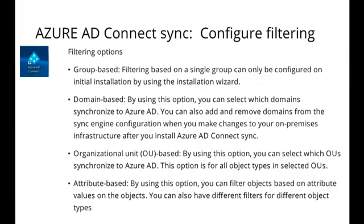Now, in general, this is the recommended configuration. But in some scenarios, you may want to apply a filter to control which objects are synchronized from your on-premise directory to your Azure Active Directory. Now, there are a number of filtering options. Let's take a look at these filtering options.